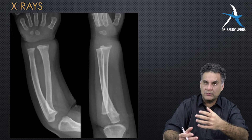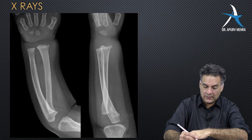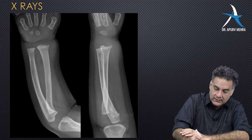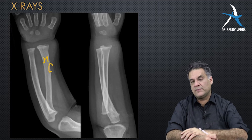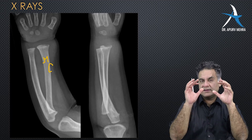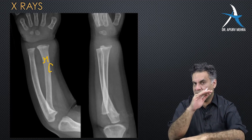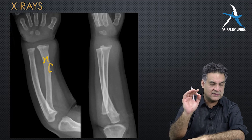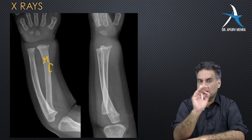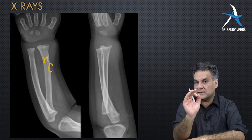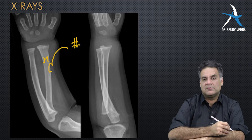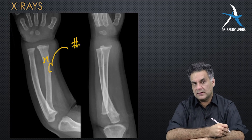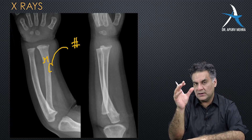A bone has marrow in the center and the cortex on the periphery. The cortex is a thicker, stronger bone. A break in the cortex is called a fracture — fracture is not just a break in the bone, it is specifically a break in the cortex of the bone.